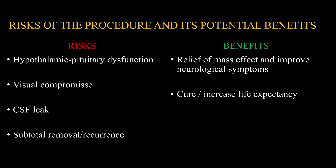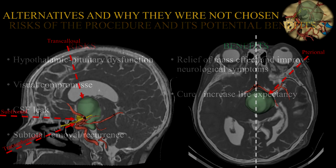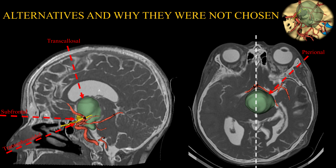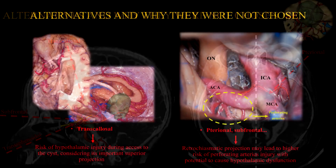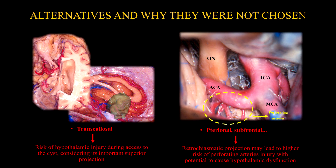Following proper evaluation, microsurgical resection was indicated. A posterior petrosal approach was employed considering the retrochiasmatic location of the tumor. A transcallosal corridor was avoided given the major superior extension of the mass towards the third ventricle, which adds risk of hypothalamic involvement and injury during surgical access to the cyst.